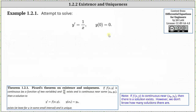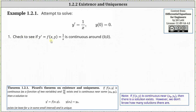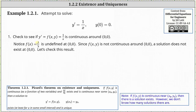Let's look at some examples. We'll attempt to apply Picard's theorem to y prime equals one divided by x with the initial condition y of zero equals zero, to see if there is a solution and if so whether it's unique. The first step is to check if y prime equals f of x comma y, which in this case is one divided by x, is continuous around the point zero comma zero. The function f of x equals one divided by x is undefined at zero comma zero because when x is zero we have division by zero. Since f of x comma y is not continuous around zero comma zero, a solution does not exist at zero comma zero.